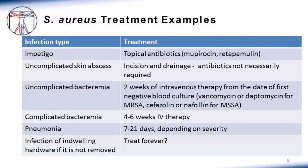For complicated bacteremia, where patients have a worse prognosis, therapy should be longer — four to six weeks — and is all intravenous. For pneumonia, the optimal treatment duration is not well defined. Usually between one and three weeks, or seven to twenty-one days, depending on severity and the patient's response to therapy. A patient who improves more quickly might receive a shorter course, while someone who remains on the ventilator or responds poorly may receive a longer course.